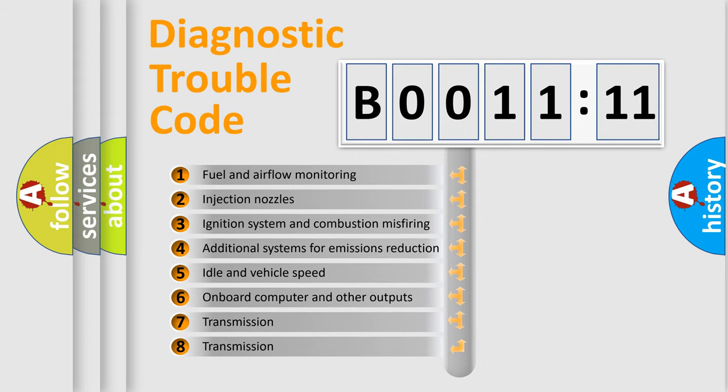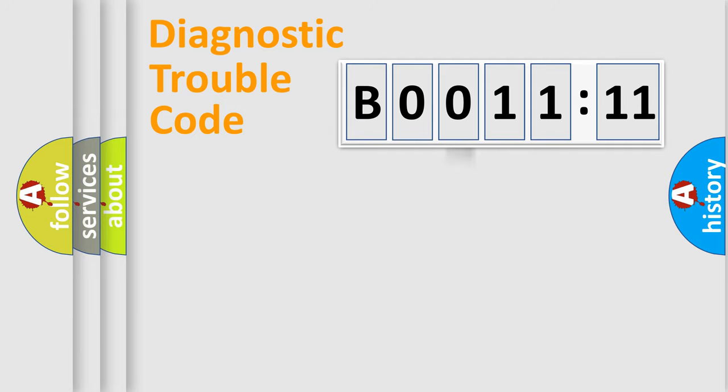The third character specifies a subset of errors. The distribution shown is valid only for the standardized DTC code. Only the last two characters define the specific fault of the group.